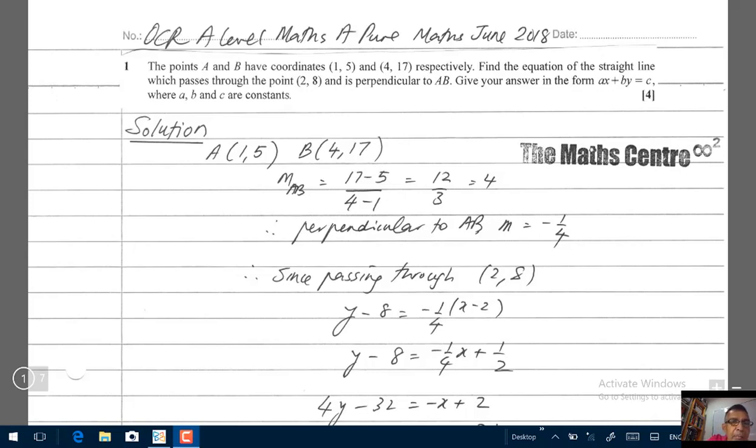So this is question number 1. Let's read it. We have the points A and B, coordinates 1, 5 and 4, 17. So let's just have a picture here. This is A, 1, 5 and this one here is B, 4, 17.